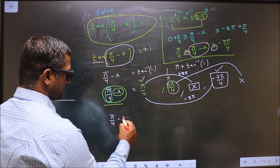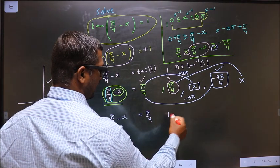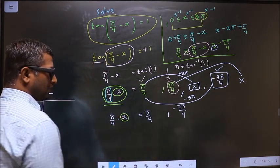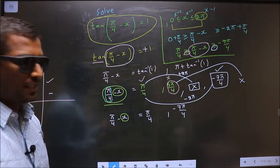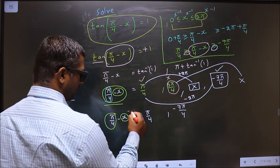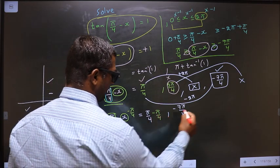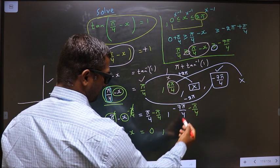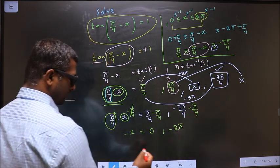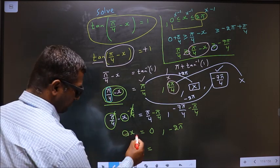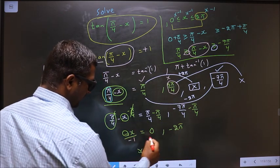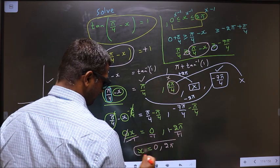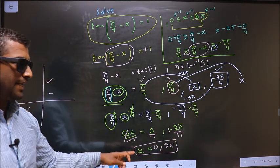So π/4 - x = π/4 and π/4 - x = -7π/4. To get x, subtract π/4 from both sides: -x = 0 and -x = -2π. Dividing by -1 gives x = 0 and x = 2π. These are the values for x — this is our answer.